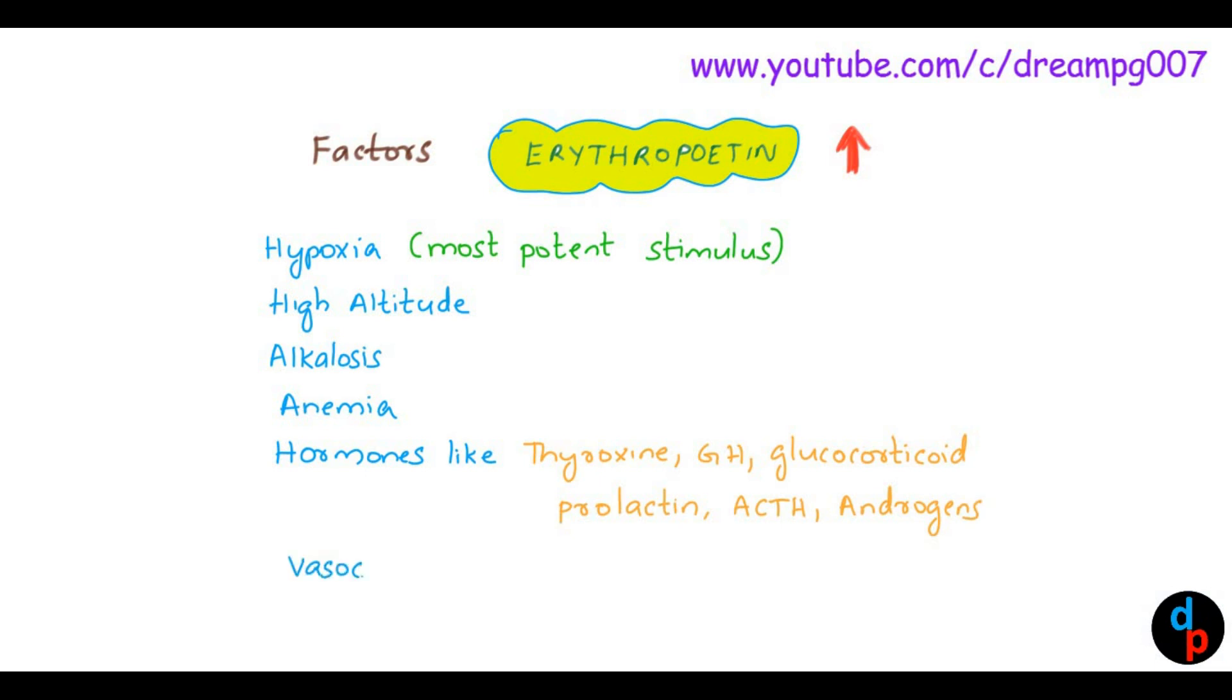How do vasoconstrictor drugs increase erythropoietin synthesis? These drugs cause renal vasoconstriction, which leads to renal hypoxia. As we know, hypoxia is the most important stimulus for erythropoietin synthesis.